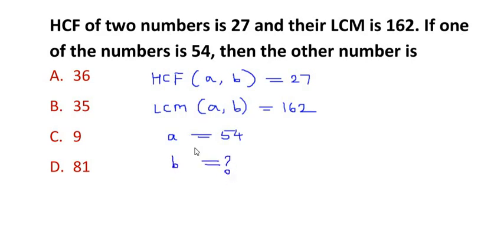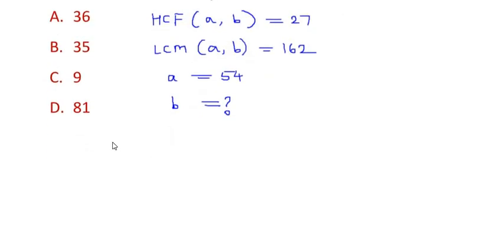Now to solve this, we have a direct formula which is given as: HCF of a, b times LCM of a, b is equal to the product of the two numbers a times b.